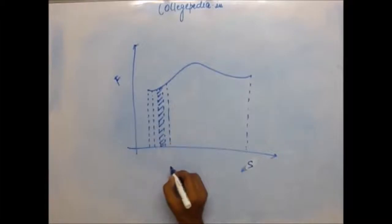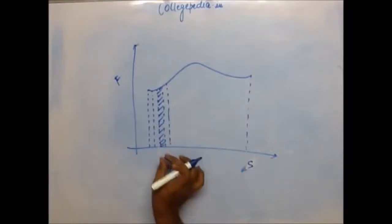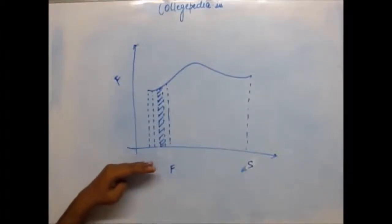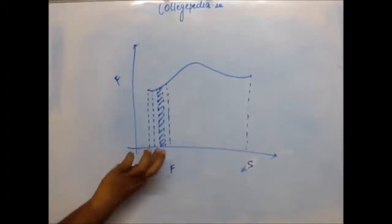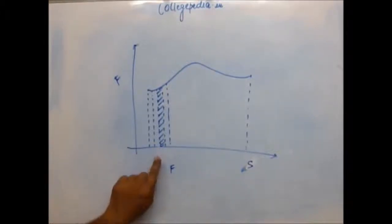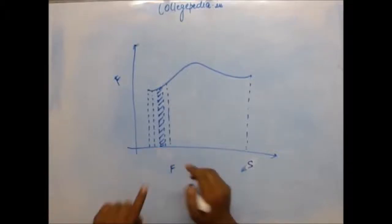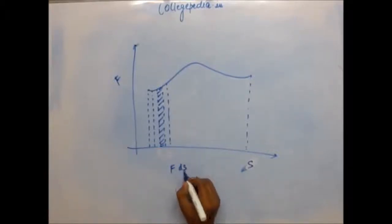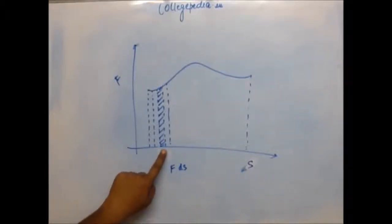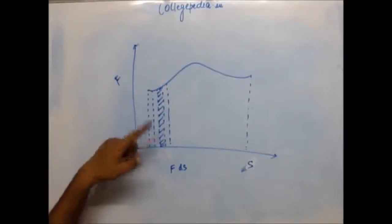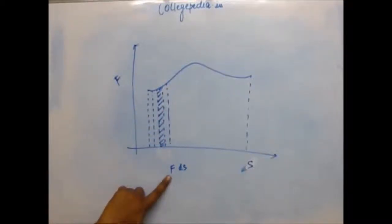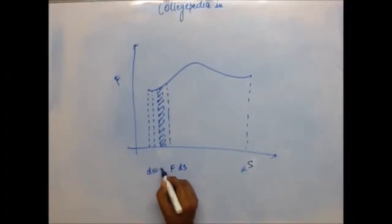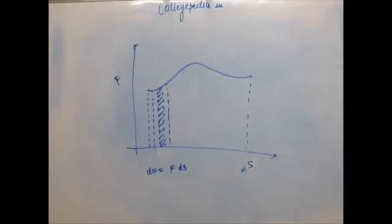This area is length which is force, and the width — because the x-axis is displacement from this point to this point — there is a small change in displacement. So this is actually ds, small change in displacement. The area of this rectangle is force into ds, and this is equal to the small work done that we have studied so far. Small work is force into small displacement.